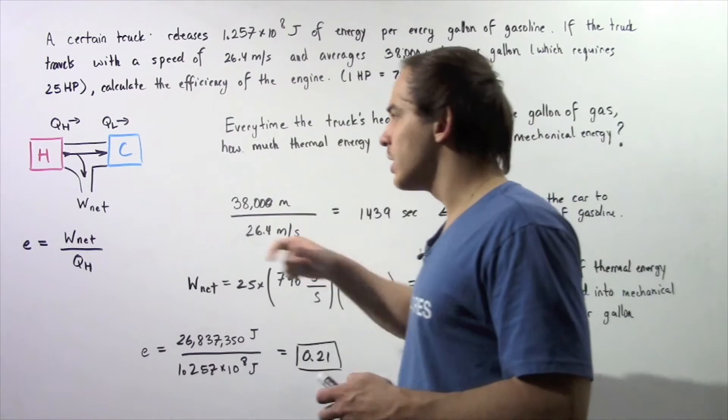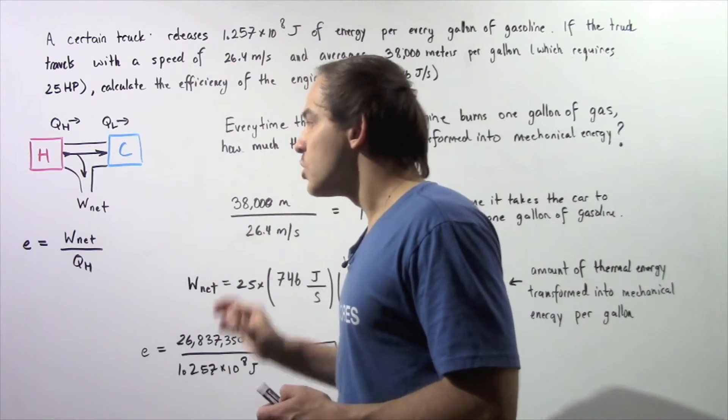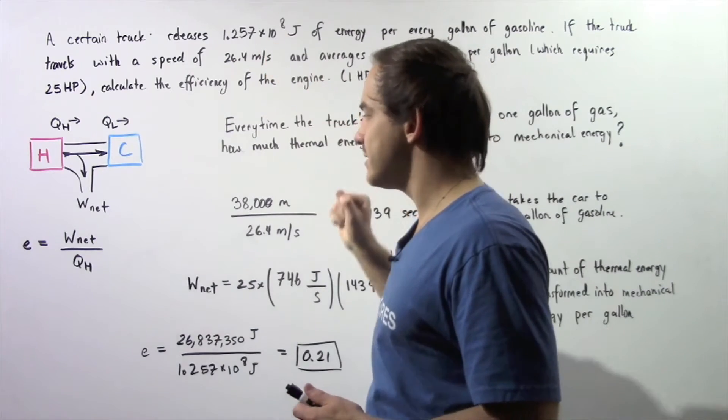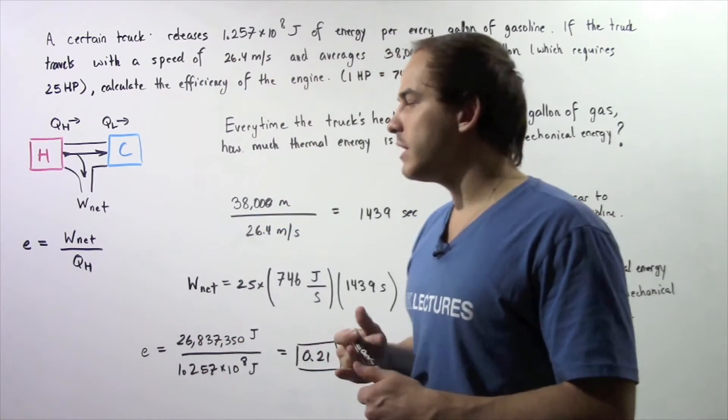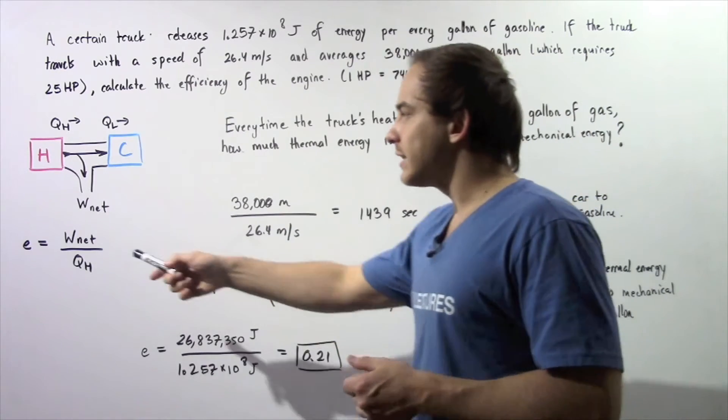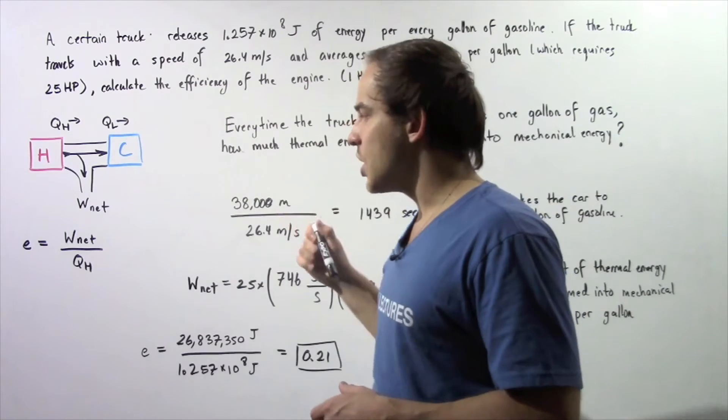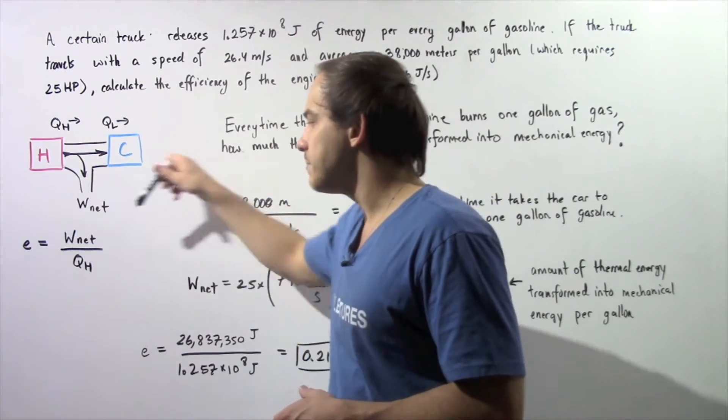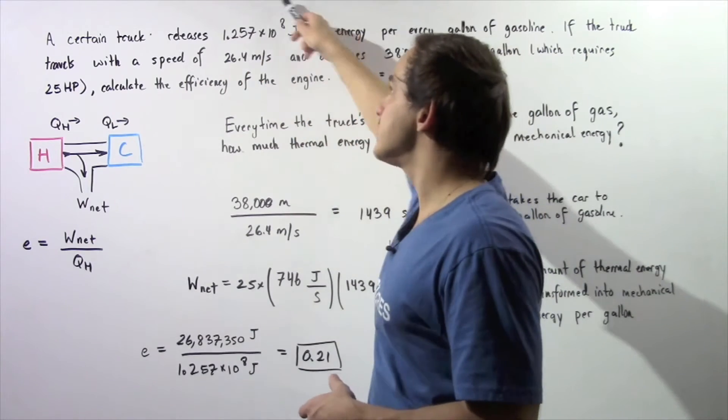If we find that value, if we find the network per gallon, we can use this quantity and this equation to calculate the efficiency of the heat engine. Recall that the efficiency of the heat engine is given by the ratio of the network divided by QH, where QH in this case is this quantity.